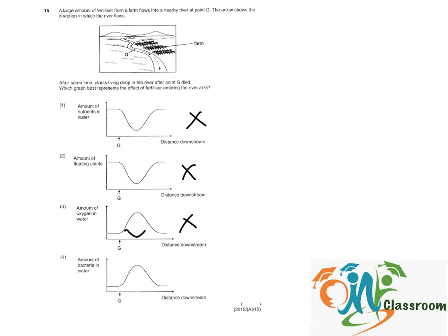And lastly, option 4: The amount of bacteria in water increases. This is due to the bloom in algae and the water plants. So when they die, the bacteria will break down the dead plants and algae into simpler substances. So basically, 4 is correct.